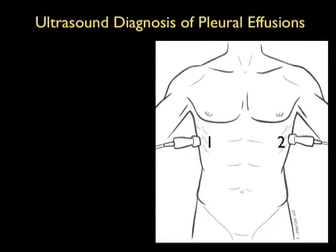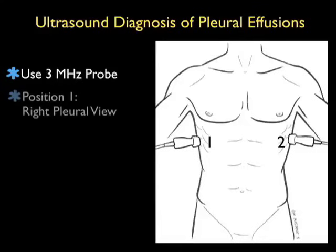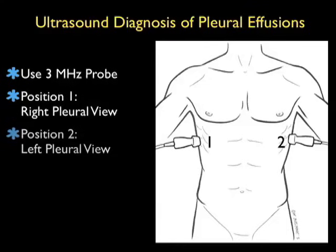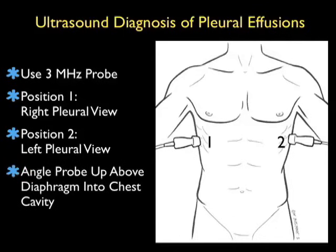Here's a slide reviewing how to perform the ultrasound examination for detection of pleural effusions. Optimally, you'll have a 3 MHz probe with a small footprint that can easily sit between the ribs, as we'll be looking into the right upper quadrant and left upper quadrant areas. In position 1, we'll be coming into the standard right upper quadrant trauma FAST exam and position the probe into that area just above the liver and below the diaphragm. We can then angle the probe upwards into the thoracic cavity to look for a dark or anechoic fluid collection signifying thoracic fluid.